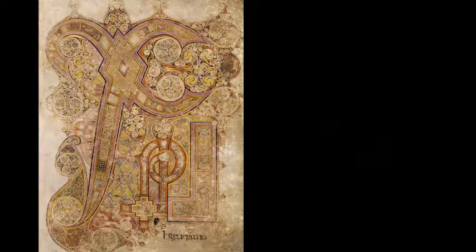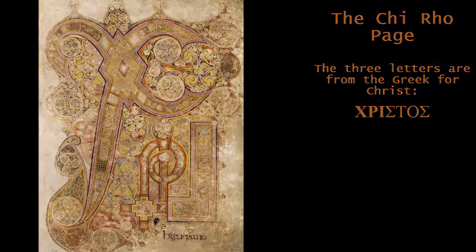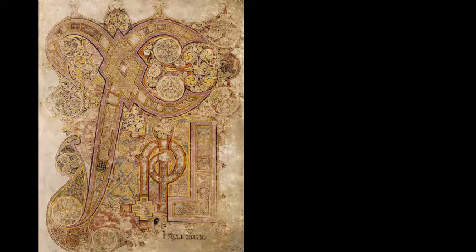The Chi-Rho page, possibly the most beautiful and powerful page in the Book of Kells, has a large letter X — Chi in Greek, the initial of Christ — sweeping across the page.